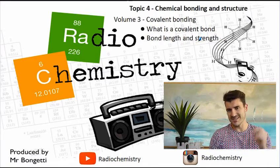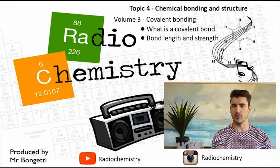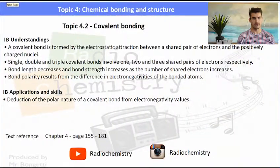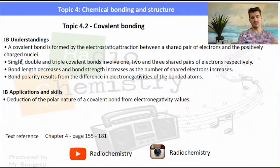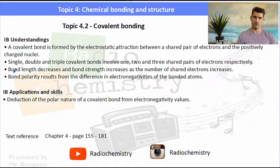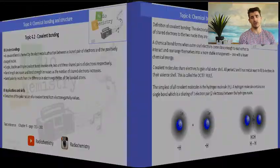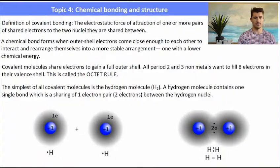We need to know what is a covalent bond and we discuss bond length and bond strength in molecules. 4.2 covalent bonding — there are a few different IB understandings focusing around single, double, and triple bonds. We talk about length and strength, we talk about polarity, and then we'll talk about a bond being non-polar covalent or polar covalent.